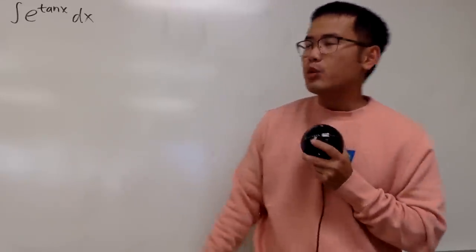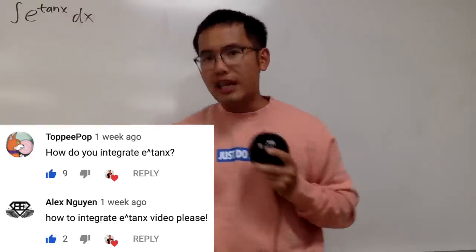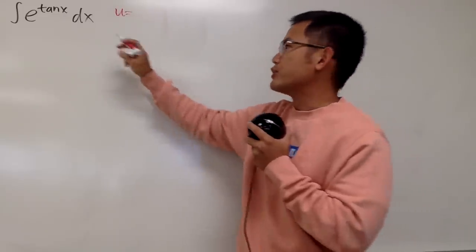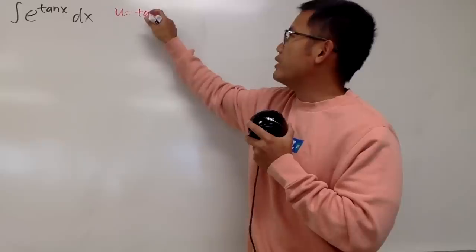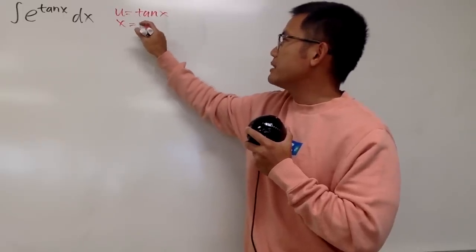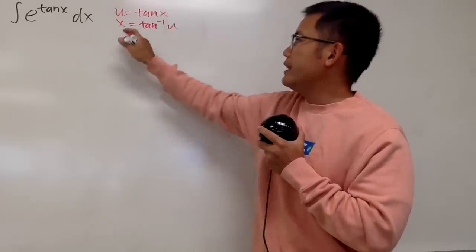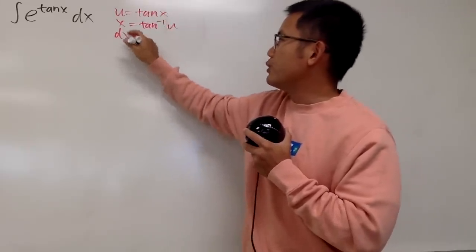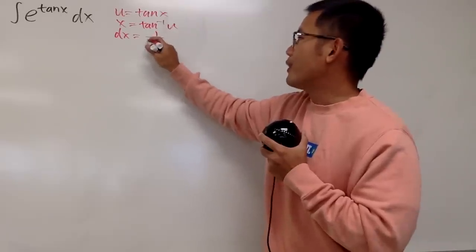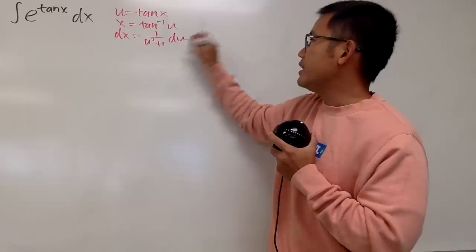Let's do some math for fun. Here we'll be integrating e to the tangent x. We'll start with a classic u-substitution. I will let u equal to tangent x, and perhaps we can also say x is the same as inverse tangent of u. Then we differentiate this real quick: dx is the same as 1 over u squared plus 1, and then du.